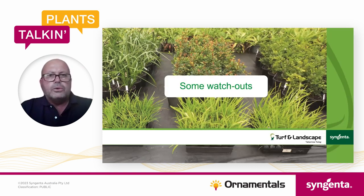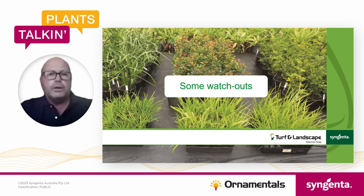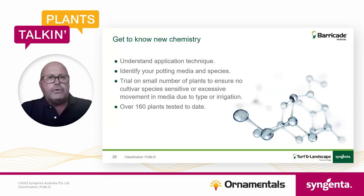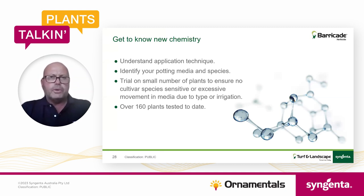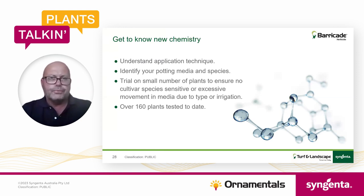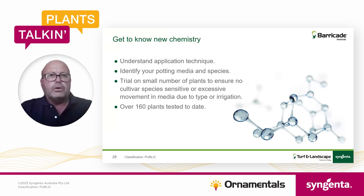There are just a few points to make sure we get right to get the best out of the product — the same really with any pesticide you're going to apply. First is the application technique. We've spoken about the importance of water volume at minimum 500 liters per hectare, the importance of nozzles using a very coarse droplet size, and the right level of irrigation post-application to position it where it needs to work.